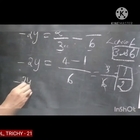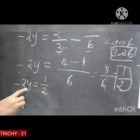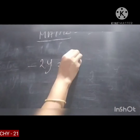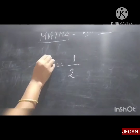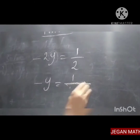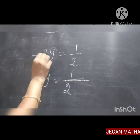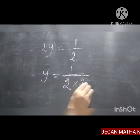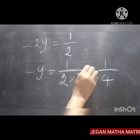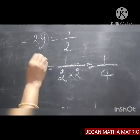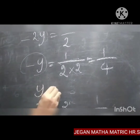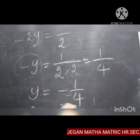We have minus 2y equal to 1 by 2. We want to find out the value of y only. So minus y equal to 1 by 2 divided by 2 — this 2 from the numerator comes to the denominator, giving 1 by 4. So the minus y value is 1 by 4. We want to give the value of the variable in plus sign only. So plus y equal to minus 1 by 4.